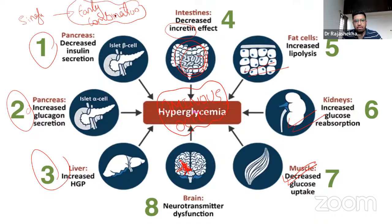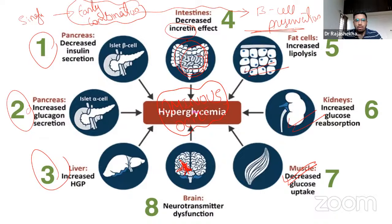Another reason for early combination therapy is beta cell preservation. We need to address combination therapy early to preserve our beta cells.